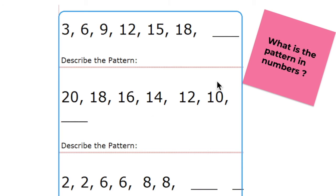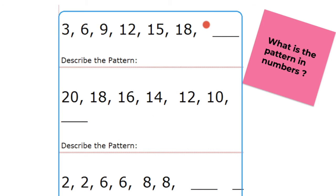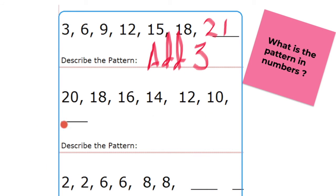Next exercise: what is the number pattern in 3, 6, 9, 12, 15, 18, blank? To find the pattern you can use addition, multiplication, or subtraction. From 3 to 6, 6 to 9, 9 to 12, 12 to 15, 15 to 18 — it is very clear that the rule is adding 3. So the next number after 18 is 21.